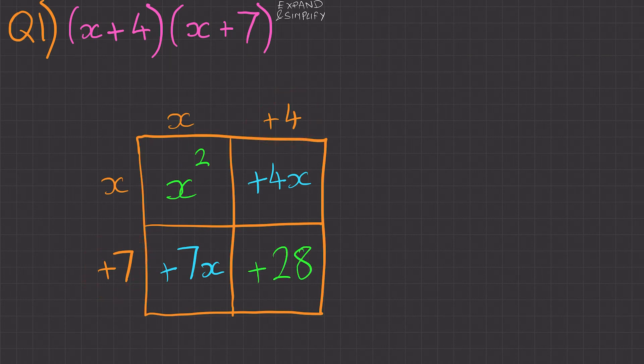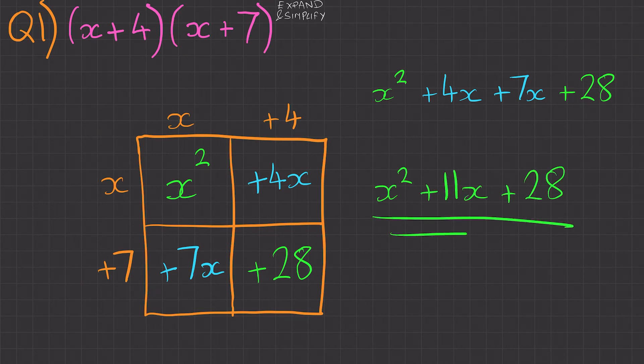Next I'm going to write this expression out. So x squared plus 4x plus 7x plus 28. That becomes x squared plus 11x plus 28. There's our final answer.